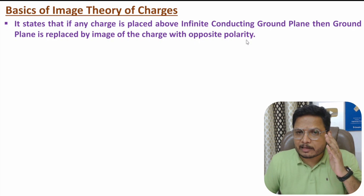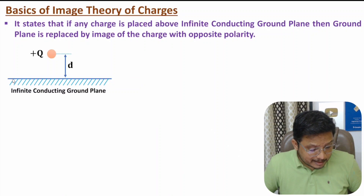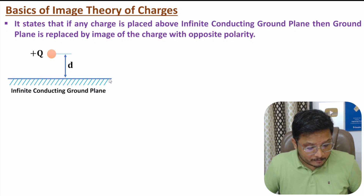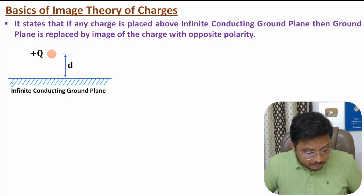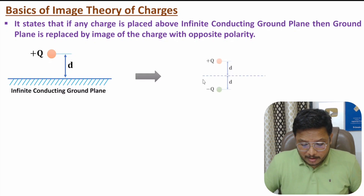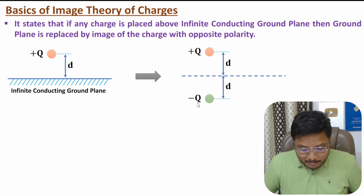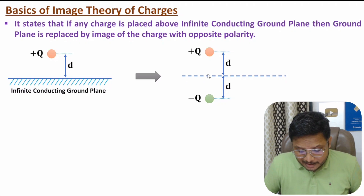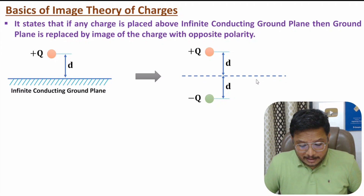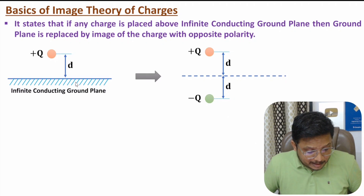Let me give you some examples for more clarity. Here we have an infinite conducting ground plane, and a positive charge placed at spacing D with respect to it. As per image theory, we replace this infinite conducting ground plane by an image of the charge, shown here in green, which has opposite polarity. The image charge is placed at an equal spacing D on the other side of the ground plane line.